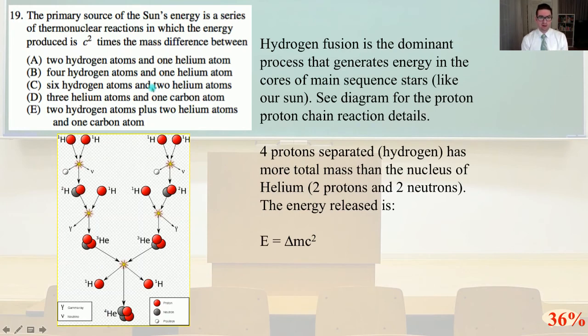Number 19. The primary source of the sun's energy is a series of thermonuclear reactions in which the energy produced is C² times the mass difference between. Hydrogen fusion is the dominant process that generates energy in the core of main sequence stars like our sun. See the diagram provided below for the proton-proton chain reaction details. Four protons separated, which is hydrogen, has more total mass than the nucleus of helium, two protons and two neutrons. The total energy released is our change in mass times C². The difference between those two is the sun's thermonuclear reaction. That is answer B.